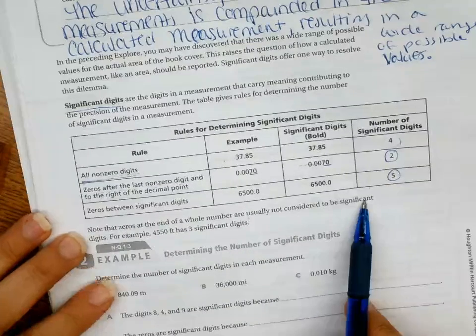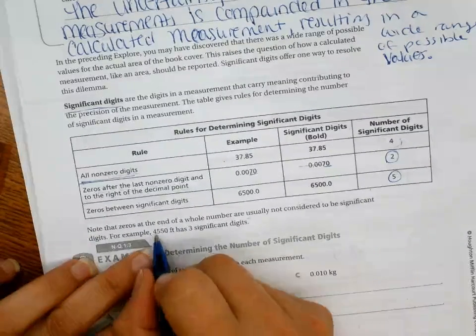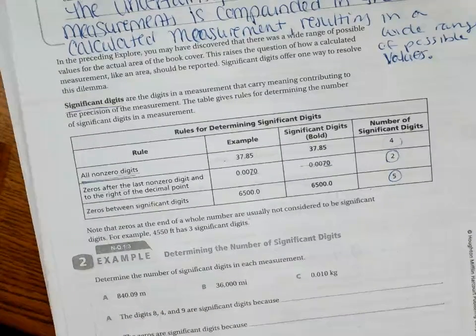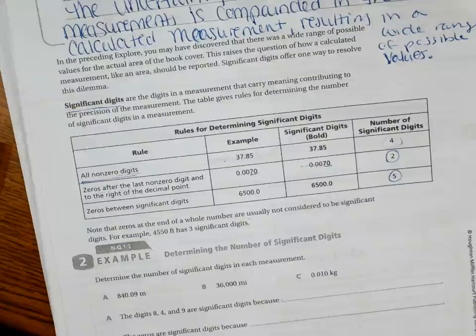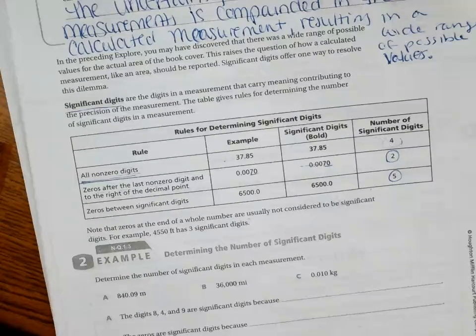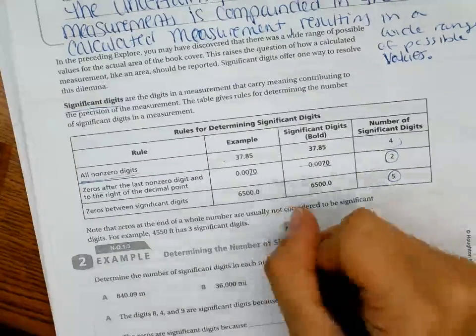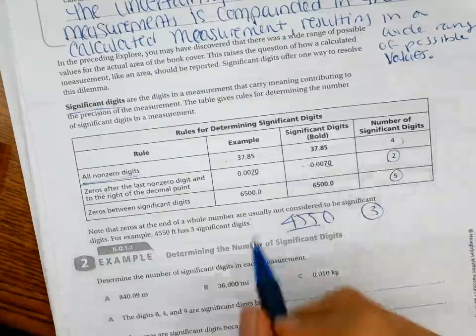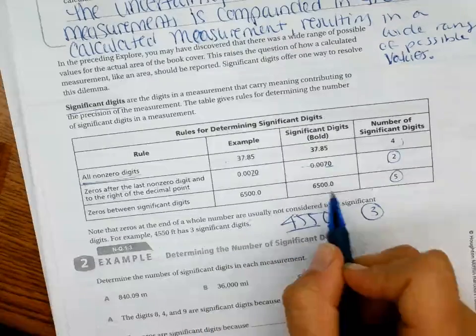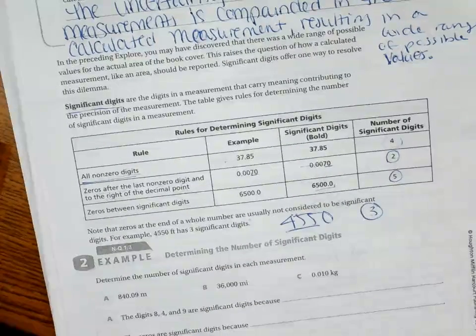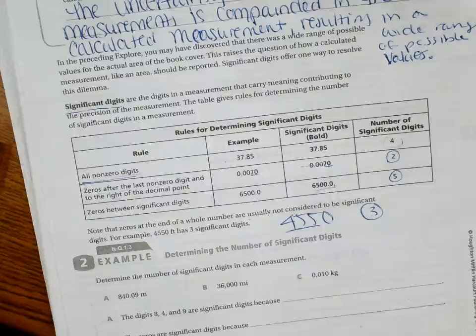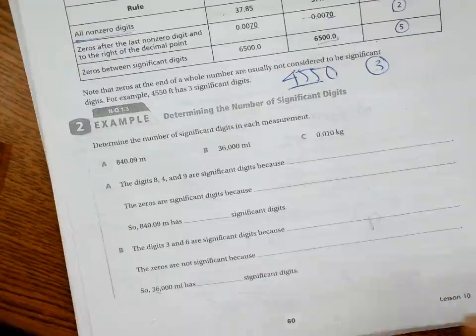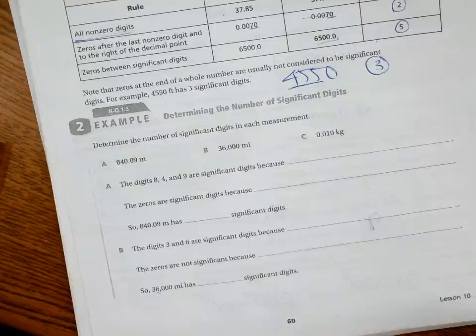So note that the zeros at the end of the whole number are usually not considered to be significant digits. For example, 4550 feet has three significant digits. So the only reason, so if 4550 has three significant digits, the only reason that these count is because they put that point zero to make it count. Does that make sense?